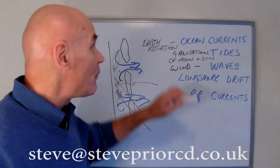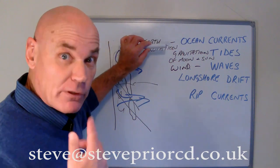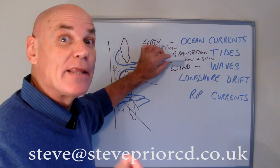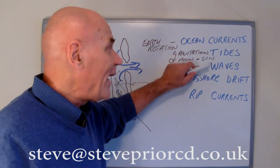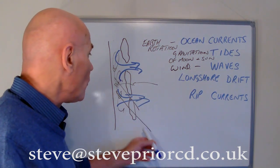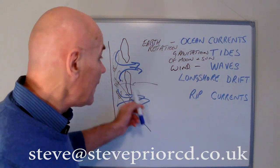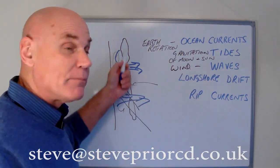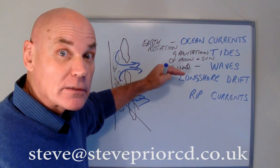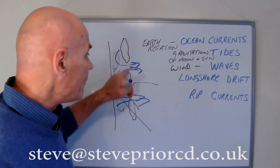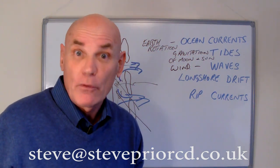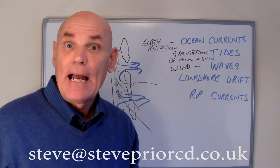To recap: ocean currents are caused by the earth's rotation. Tides are caused by the gravitational pull of the moon and the sun, as well as topographical features. Waves are caused by wind — that's all. Longshore drift is caused by waves or currents coming into the shore at an angle, pushing water along. And rip currents are caused by obstructions in the water creating a build-up that funnels out fast and strong between the obstacles. I hope that's cleared things up. On my web page there will be some practice questions for you, and I'll speak to you again soon.